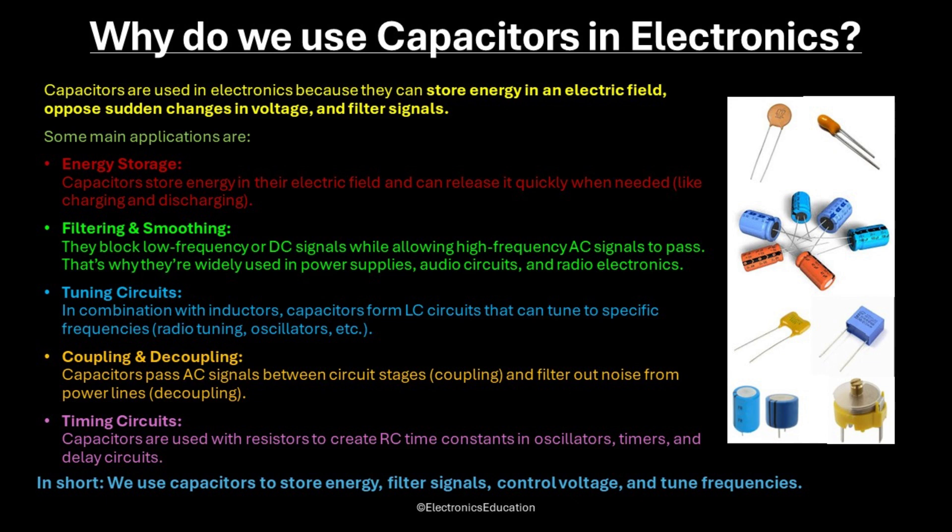Now why do we use capacitors in electronics? Capacitors are used in electronics because they can store energy, oppose sudden changes in voltage, and filter signals. Some main applications are mentioned here. Capacitors are used to store energy to compensate for abrupt cuts in the DC supply. Capacitors block low-frequency or DC signals while allowing high-frequency AC signals to pass. That's why they are widely used in power supplies, audio circuits, and radio electronics as filtering blocks.